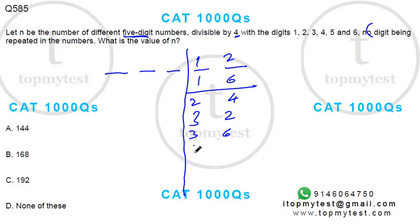With 5, it'll be 52 and 56. And with 6, the only number possible is 64. So the last two digits can have 1, 2, 3, 4, 5, 6, 7, 8—eight cases. Now you need to fill the remaining three digits.